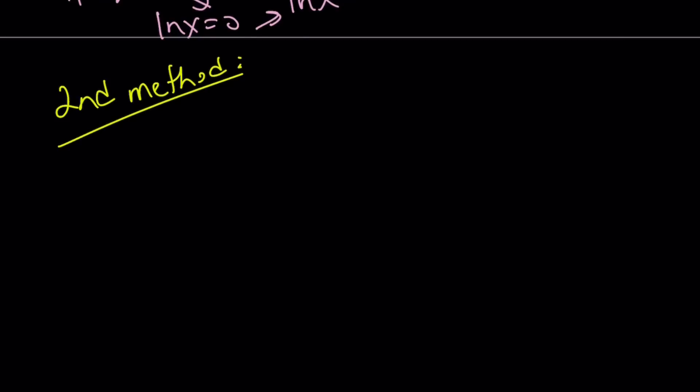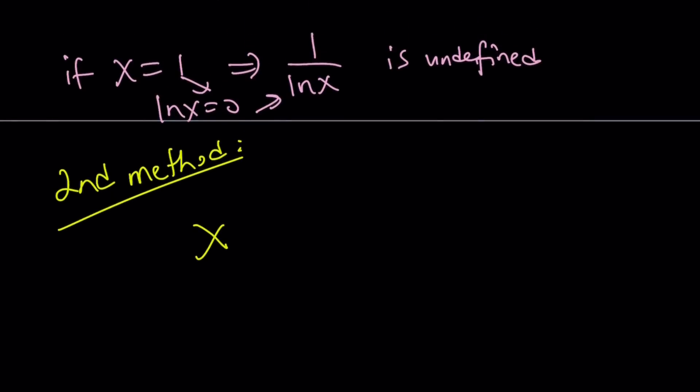Let me rewrite the equation so you get to see the original problem. I got x to the power 1 over ln x equals e to the power x minus 1. And I'm going to be solving for x values.